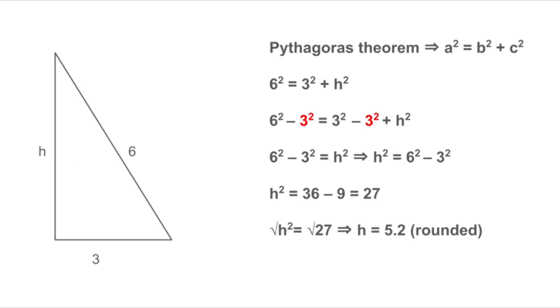The hypotenuse is six. One leg is three. And the other leg, the one we're solving for, is the height, which we'll call H. So we write six squared is equal to three squared plus H squared. That becomes 36 is equal to nine plus H squared. Now let's isolate H squared by subtracting nine from both sides. H squared is equal to 27.